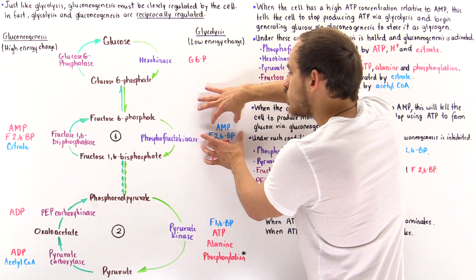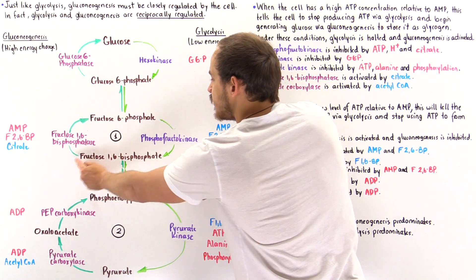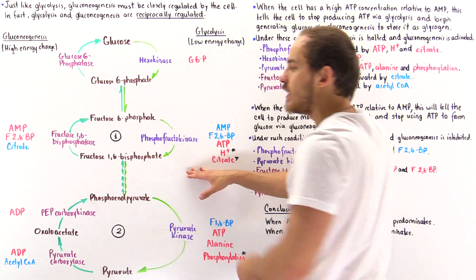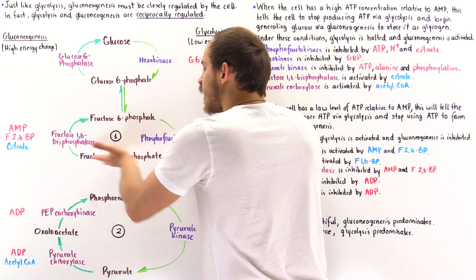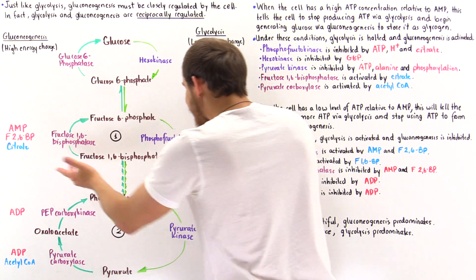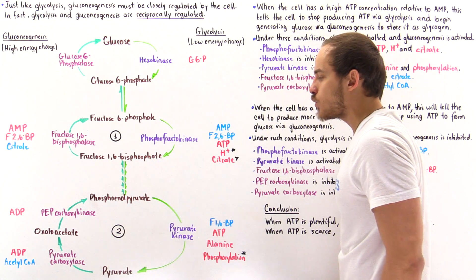Well, if these two molecules activate the activity of phosphofructokinase, we're going to create many more fructose 1,6-bisphosphate, and as this molecule builds up in concentration, it will depend on pyruvate kinase to transform these ultimately into pyruvate.